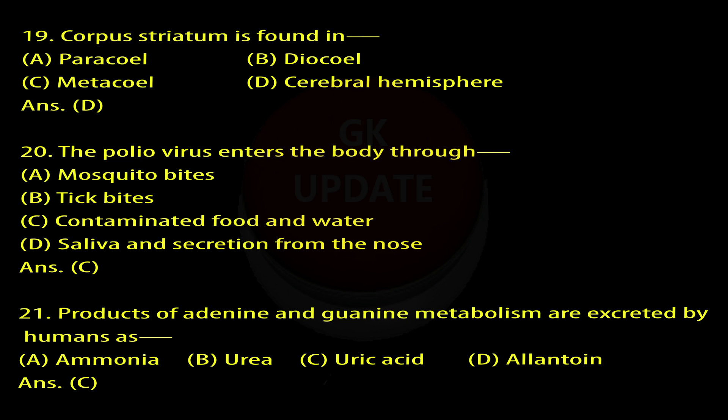Question 20: The polio virus enters the body through — A. Mosquito bites, B. Tick bites, C. Contaminated food and water, D. Saliva and secretion from the nose. Answer: C.